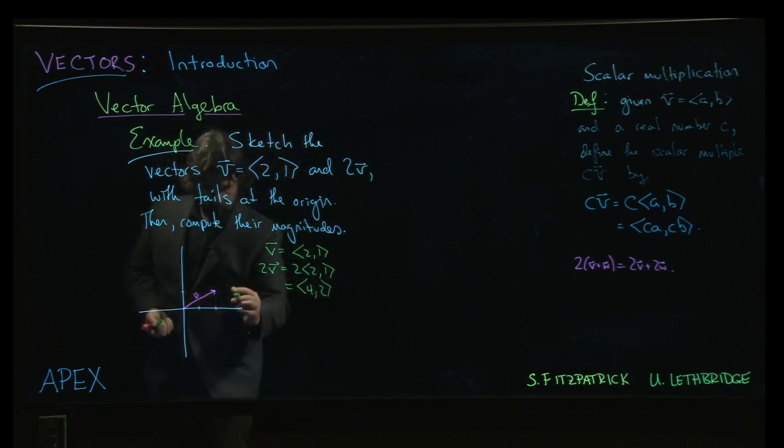we get the vector (4,2). And so if we go there, we get the vector here, which is going to look like this, right?